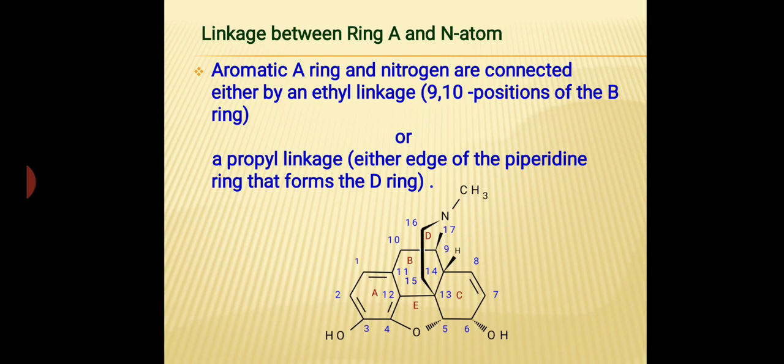In the other two pathways, we start from position 12 and wish to reach position 17. There are two possibilities: first, moving through positions 13, 14, and 9 — that is, a propyl linkage. Another possibility is starting from 12 and going through 13, 15, and 16, then finally reaching position 17 — again, a propyl linkage is present.